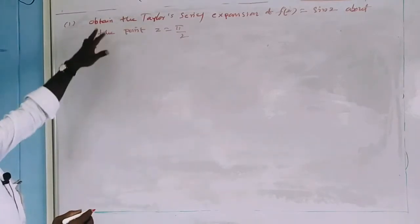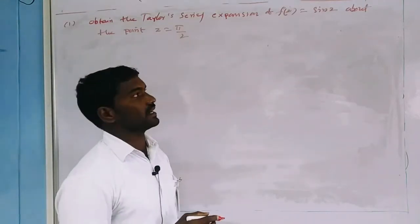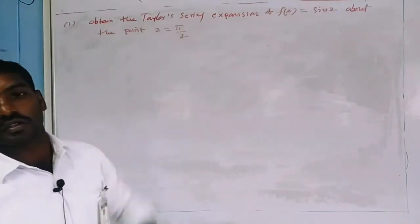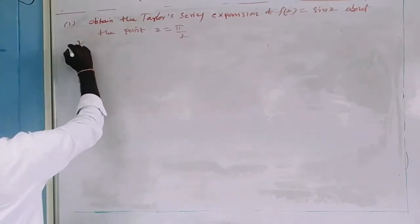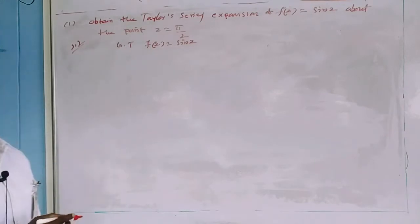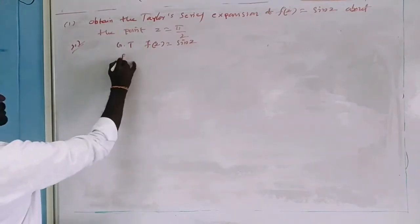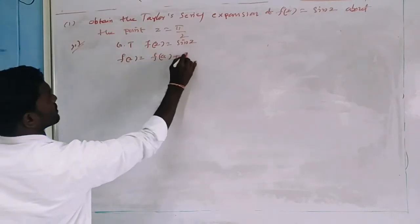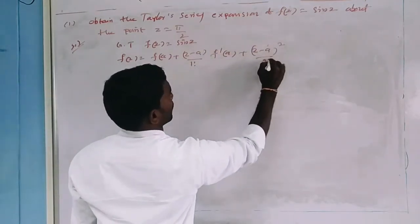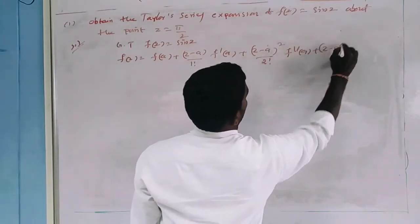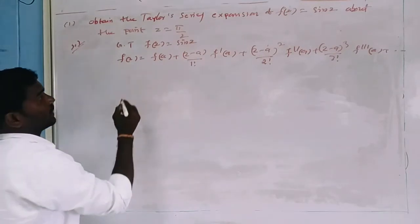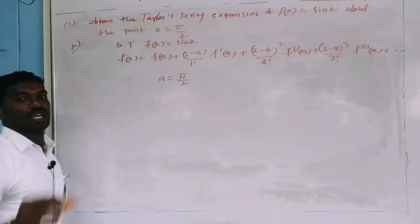Next problem: Obtain the Taylor series expansion of F of Z equals sin Z about the point Z equals pi by 2. The Taylor series expansion of F of Z about Z equals A is given by: F of Z equals F of A plus Z minus A by 1 factorial into F-dash of A, plus Z minus A whole square by 2 factorial into F-double-dash of A, plus Z minus A whole cube by 3 factorial into F-triple-dash of A, plus and so on. Here the value of A equals pi by 2.